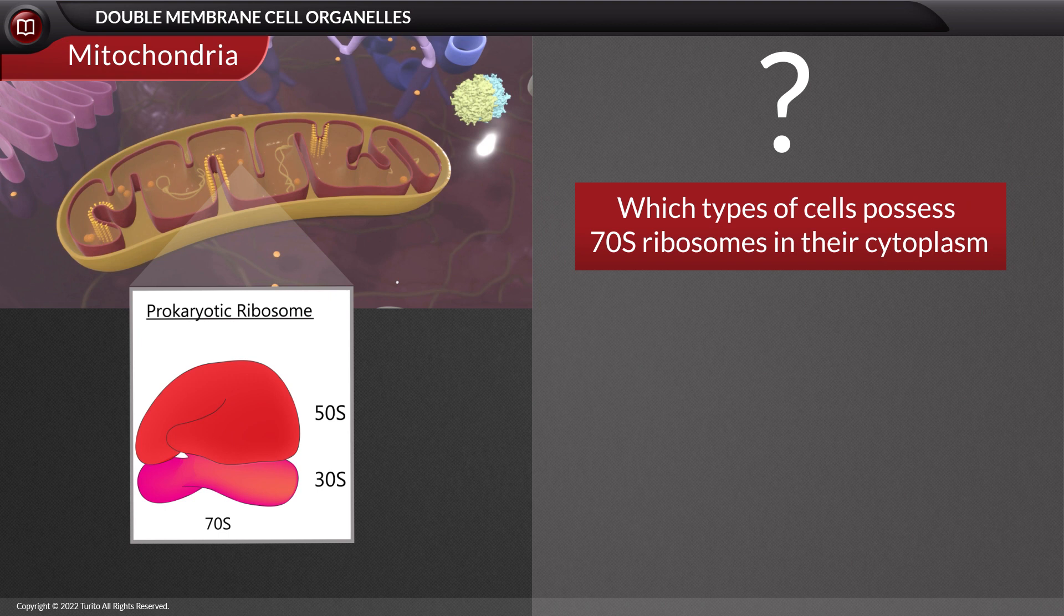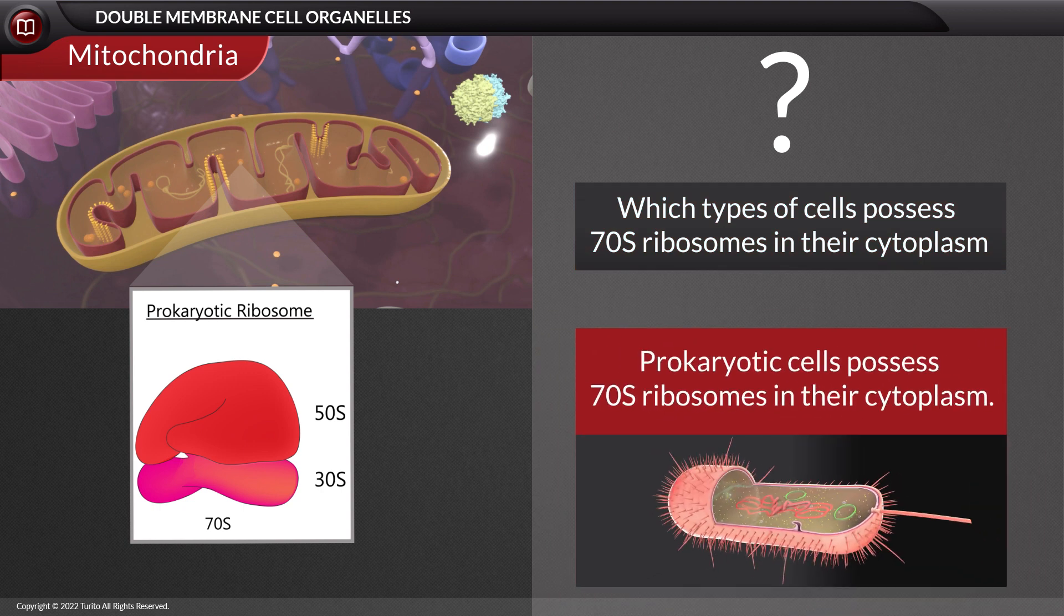Which types of cells possess 70S ribosomes in their cytoplasm? Prokaryotic cells possess 70S ribosomes in their cytoplasm.